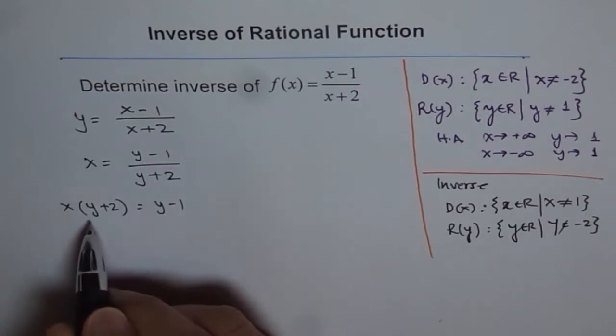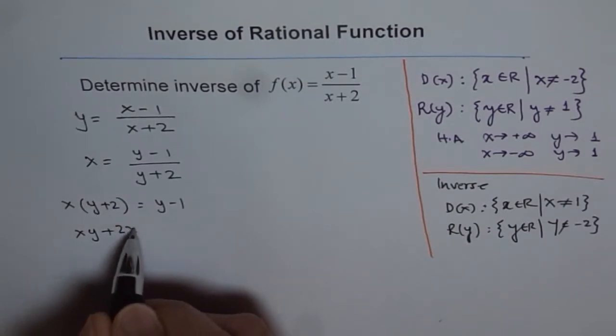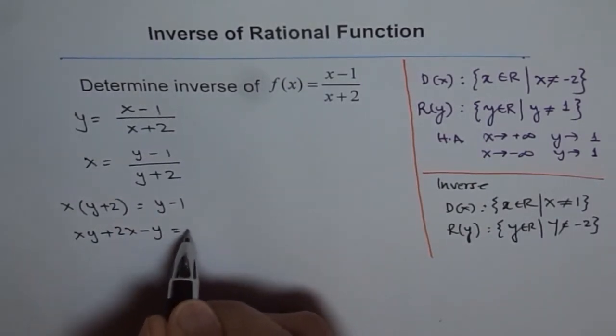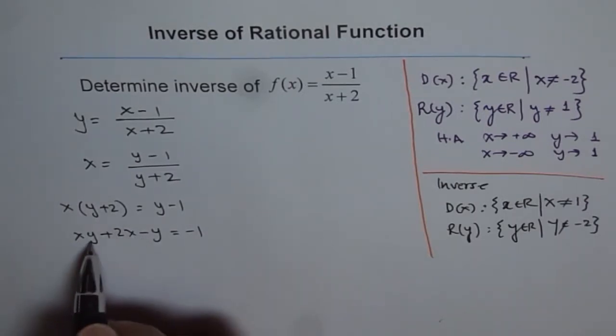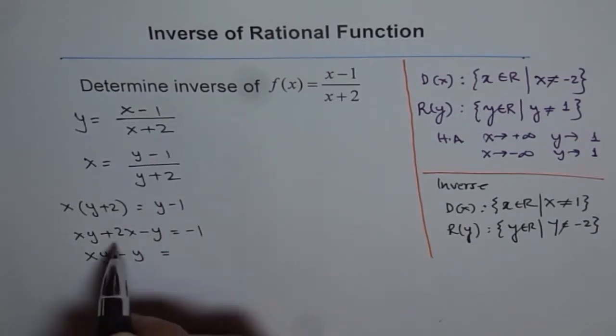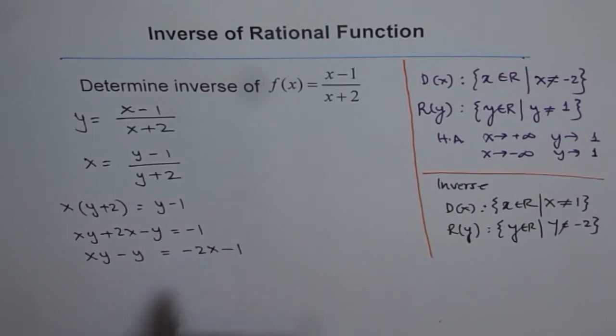And then we will bring y's together. So we have xy plus 2x, and we will bring this y on this side, which is minus y equals to minus 1. Now, on this side, we have xy minus y. So xy minus y, we can take y common, and let me do this in two steps. We have xy minus y equals to, take this 2x on the right side, so we have minus 2x minus 1.